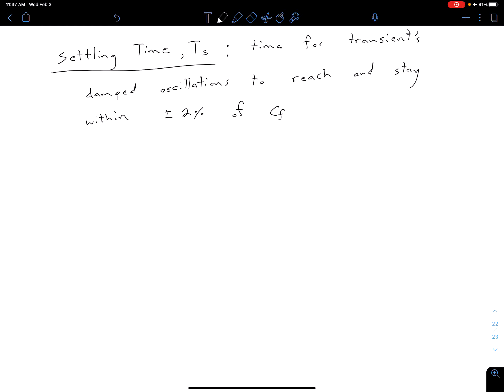The other two parameters we're going to use to characterize our under-damped second-order systems we've seen before with our first-order system. The first of these is our settling time, T sub S. Just like before, we're going to define this as the time it takes for the transients damped oscillations to reach and then stay within 2% of our final value, C sub F.